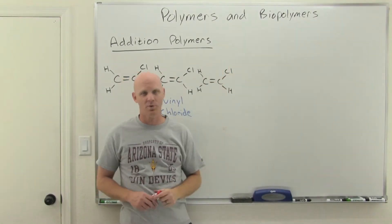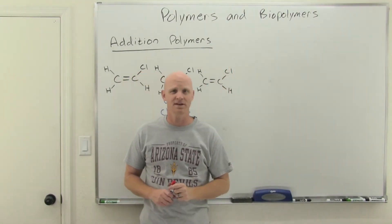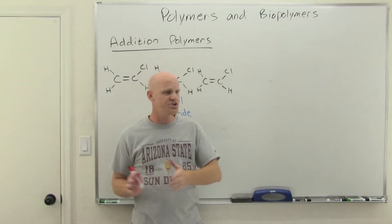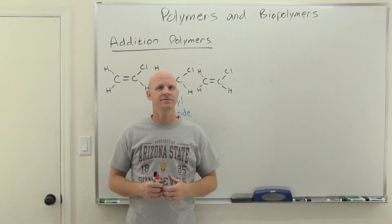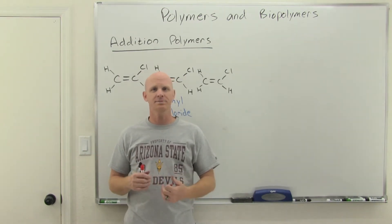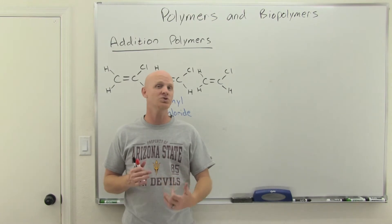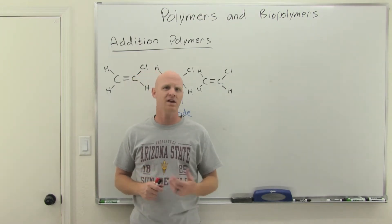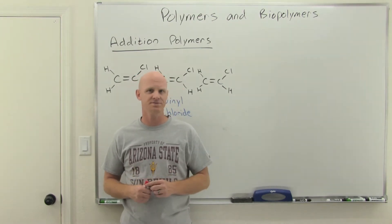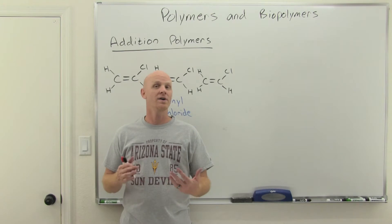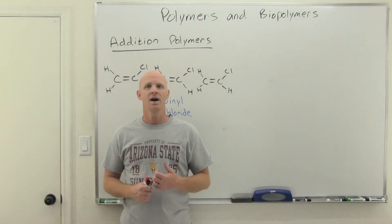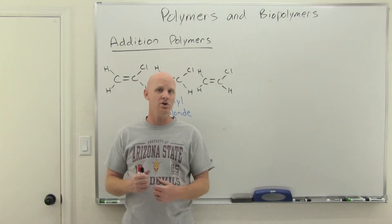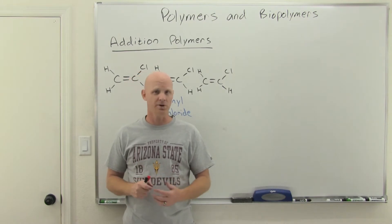Polymers and biopolymers are going to be what we're discussing in this lesson. A polymer is just a repeating chain of very similar molecules, or in many cases, identical molecules. A big branch of chemistry — a lot of plastics and things of this sort — are examples of polymers. Think of any plastic, or think of styrofoam, another example of a polymer.